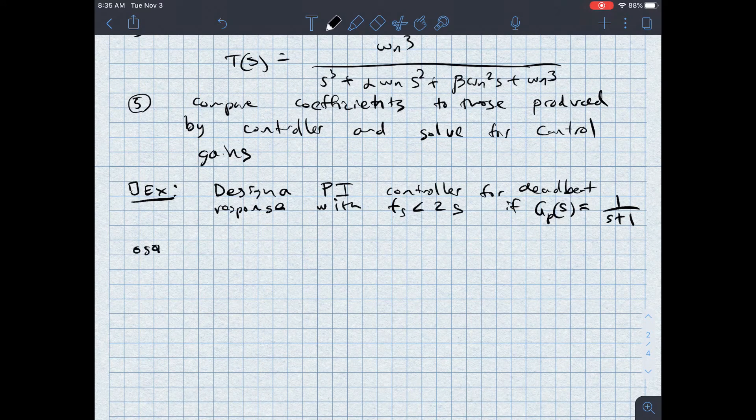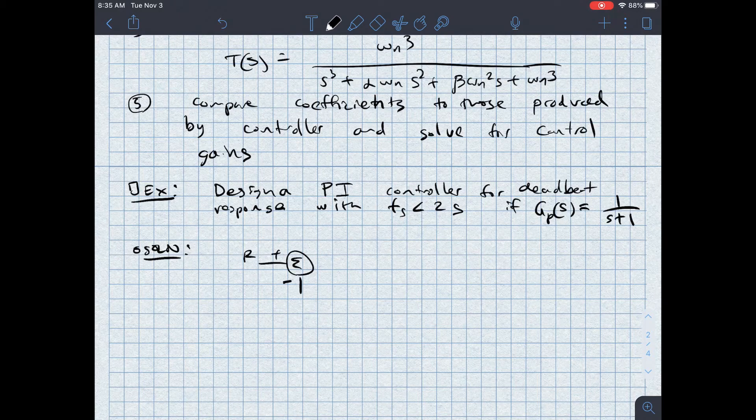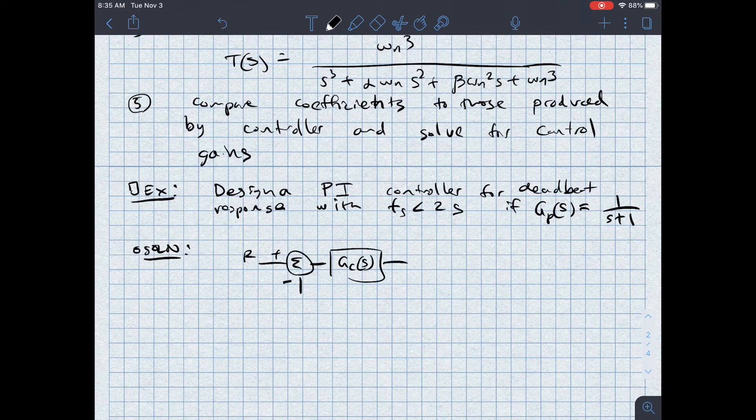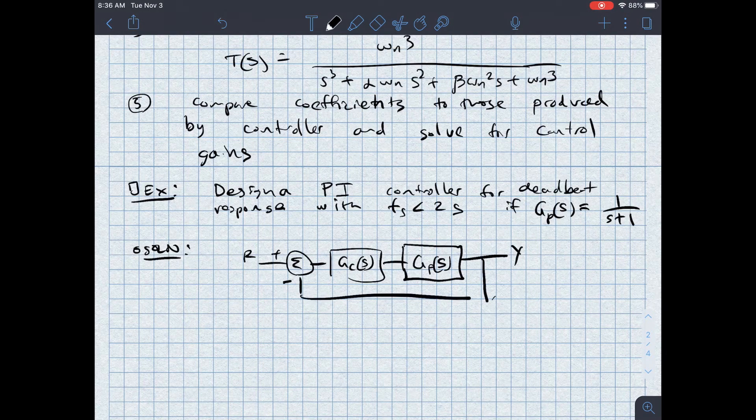If I were to draw a block diagram of this system, I've got a reference input. I've got my feedback here. I've got a controller, GC of S, here in series with GP of S, my plant. I said in series, not hey Siri, thank you. I have an output. There's my feedback.